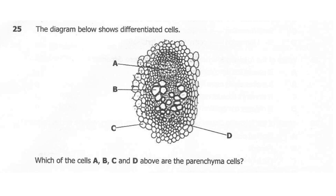Question 25. The diagram below shows differentiated cells. Which of the cells A, B, C, and D are parenchyma cells? The correct answer here is C, because parenchyma cells will contain thin cell walls. From the diagram, the cells which contain thin cell walls is C. While cells A, B, and D have thick walls — A actually has even thicker walls, making it collenchyma tissue. The correct answer here is C, which is from the cortex.